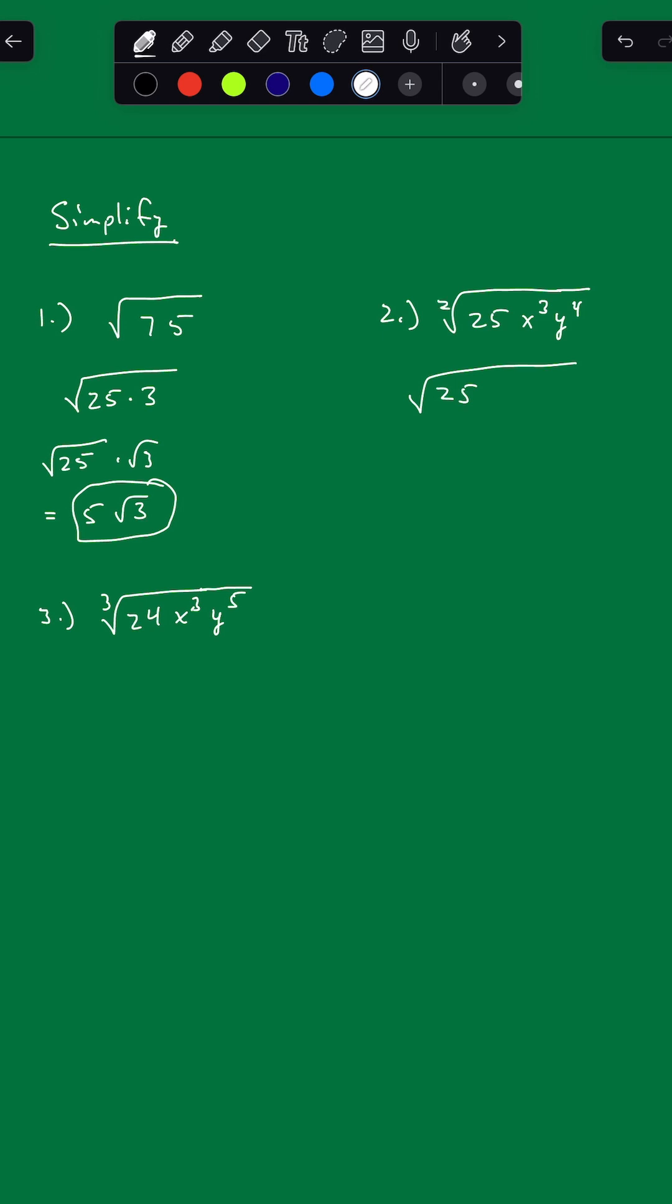2 does not divide into 3 evenly. So we can write x cubed as x squared times x to the 1st, or just x. And then 2 does divide into 4 evenly for the y to the 4th, so we leave that as y to the 4th.